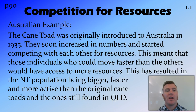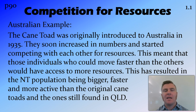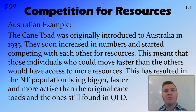The Australian example we're going to use here is the cane toad. The cane toad was introduced into Australia in 1935, and just over 100 cane toads were dropped off in an area in eastern Queensland. Immediately, this population started booming and thriving in the environment, which meant there was competition for food and breeding sites among that population.